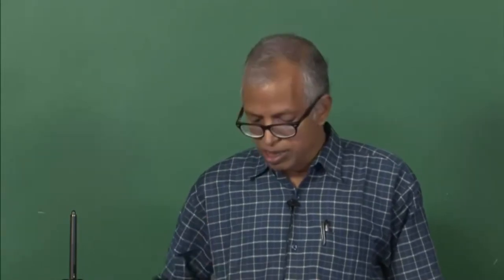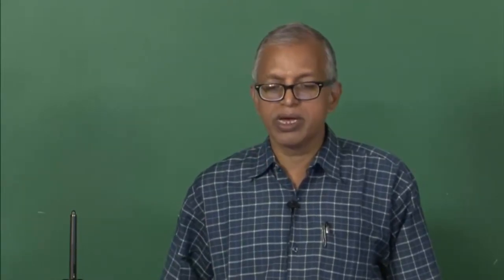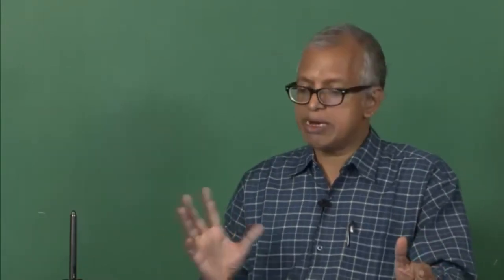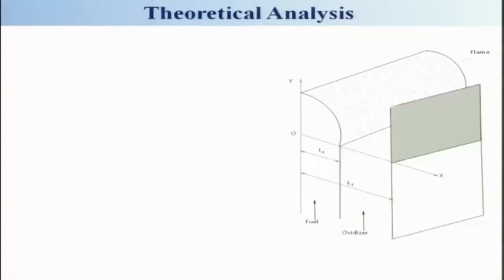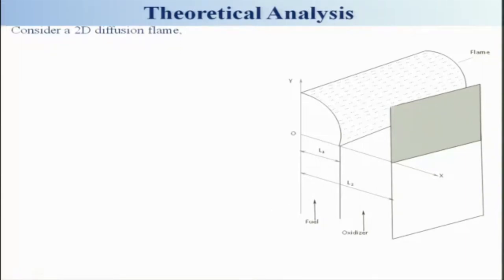Now we will be looking at laminar flames and the theoretical analysis of this. We are considering here a two-dimensional jet diffusion flame. There are two slots — these are two passages — with the two-dimensional geometry having L1 as a length, and the portion L2 minus L1 through which oxidizer is passing.